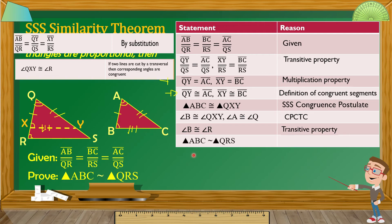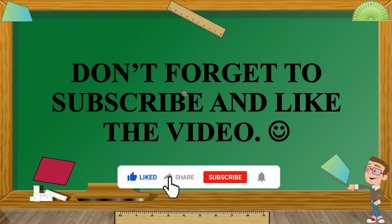Conclusion: Masasabi na natin ngayon na si triangle ABC ay similar kay triangle QRS. Yung reason natin dyan is by AA Similarity Theorem — kailangan lang natin ng dalawang angles doon sa dalawang triangle na congruent para masasabi natin na they are similar. Itong QRS at ABC: angle Q at angle A ay napakita nating congruent, and at the same time si angle R at angle B ay also congruent. So, dalawang angle na yun — ibig sabihin yung dalawang triangle na yan ay similar. Don't forget to subscribe and like the video kung nakatulong ito sa inyo.